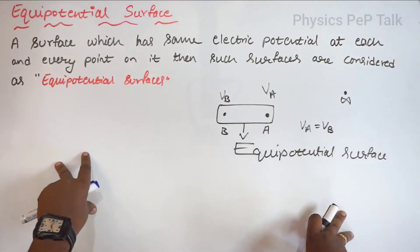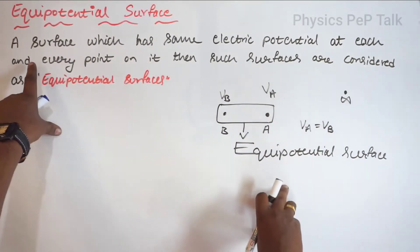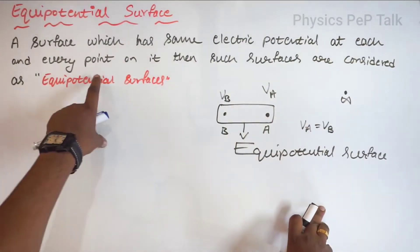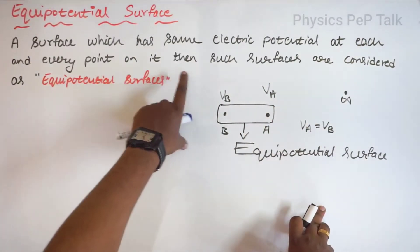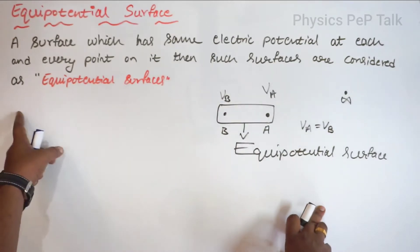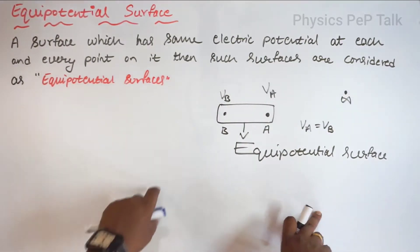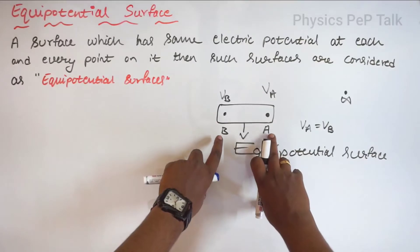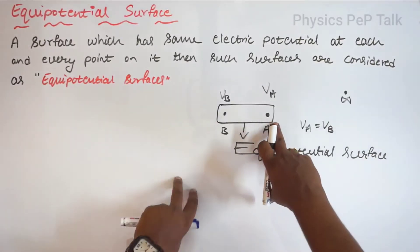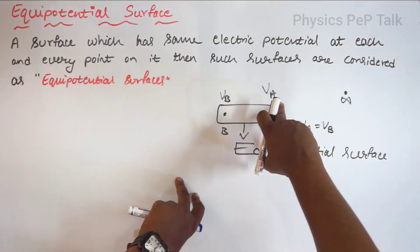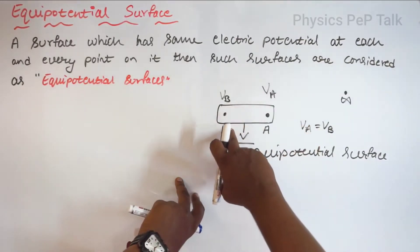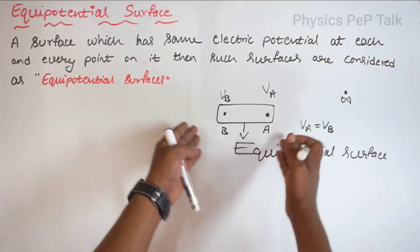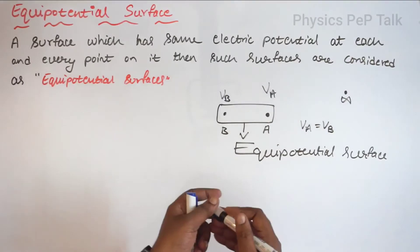What do we mean by equipotential surface? A surface which has the same electric potential at each and every point on it is considered as an equipotential surface. For example, I will consider points A and B. Electric potential at A is V of A, electric potential at B is V of B. So V of A is equal to V of B — this surface is called an equipotential surface.